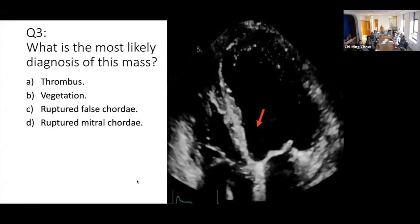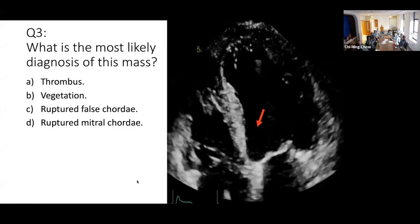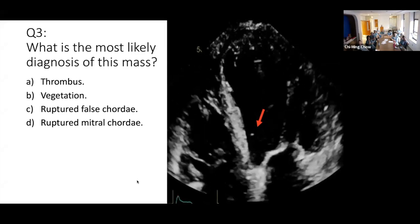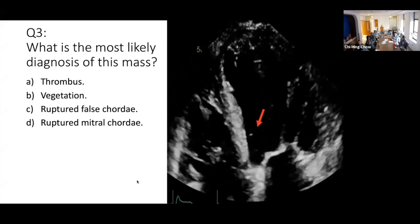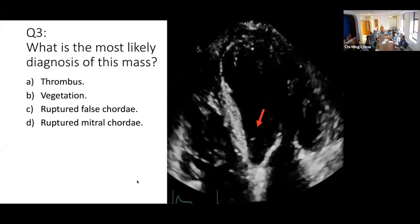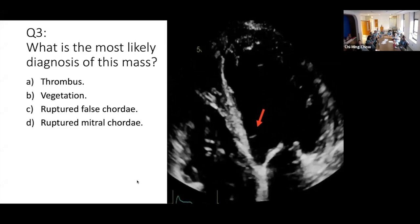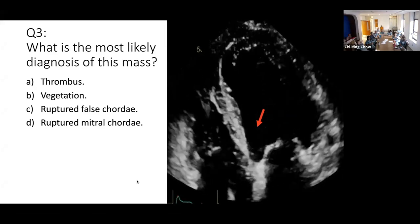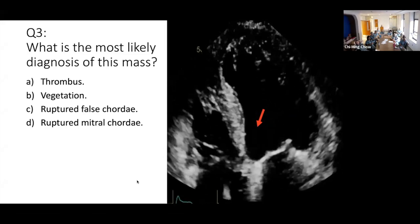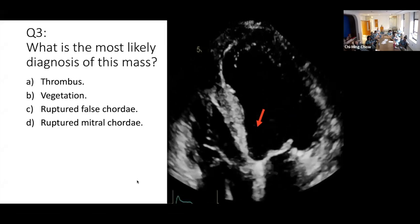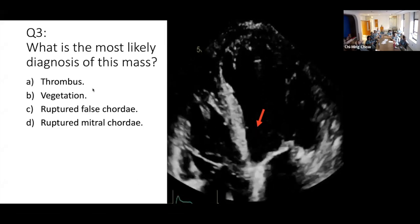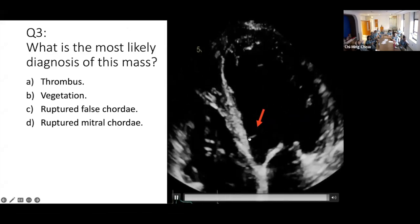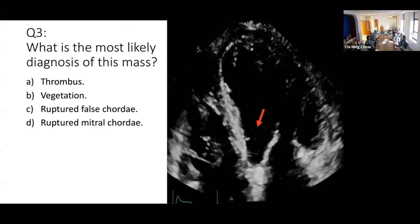What is this tiny mass on the side of the LVOT or the septum? Is it a thrombus? Is it a vegetation? Is it a ruptured chordae? Is it a ruptured papillary muscle chordae? 100% of respondents said it is a false chordae. Why is it a false chordae? Because of the site here — it is lying there.